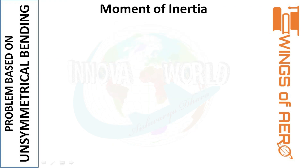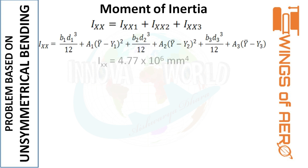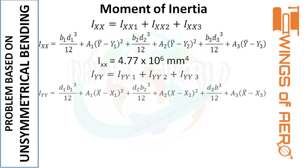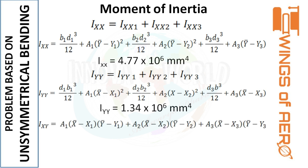Next we need to find the moments of inertia: Ixx, Iyy, and Ixy. Using the standard formula for Ixx and substituting all values, we get Ixx equals 4.77 × 10⁶ mm⁴. Similarly, finding Iyy and substituting gives Iyy equals 1.34 × 10⁶ mm⁴. For Ixy, after substituting the values we get 0, because Ixy equals zero when the section is symmetric. So for exam purposes, you can directly state that Ixy equals 0 since the section is symmetric.